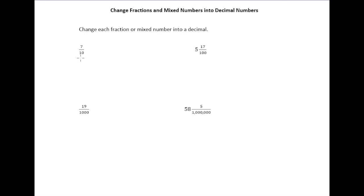Here I have 7 tenths, and first I notice there's no whole part, so I'm going to put a 0 point. Then we look at the denominator — it's a 10 — so that means I want the number to end in the tenths place, which is just 1 to the right of the decimal. So this 7 goes in that one slot to the right of the decimal, giving us 0.7.